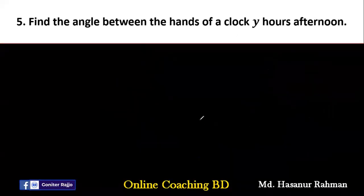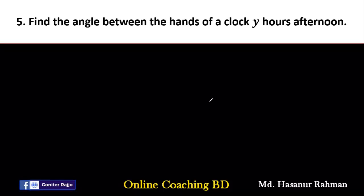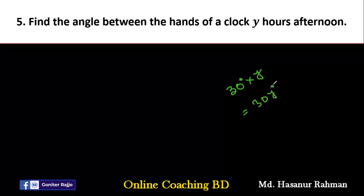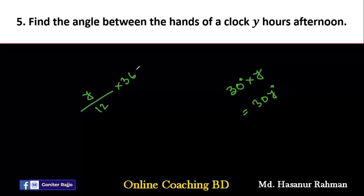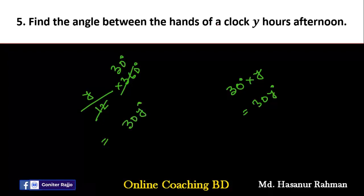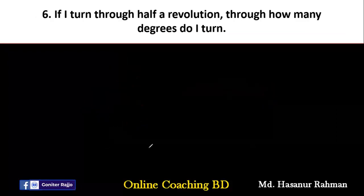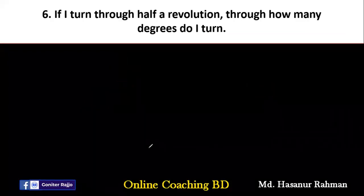Number five: find the angle between the hands of a clock at y hours. In each hour it creates 30 degrees, so at y hours the hands will create 30 multiplied by y — that means 30y degrees. Or we can say y divided by 12 multiplied by 360 degrees, which also gives 30y degrees.